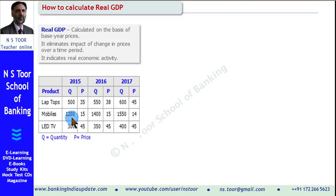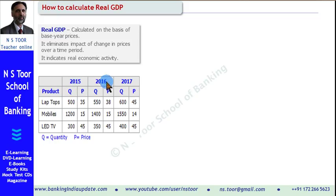Here we have the quantity of those products. Here we have the price — this price relates to the year 2015, this to 2016, and this to 2017. And this is the quantity for the respective year.